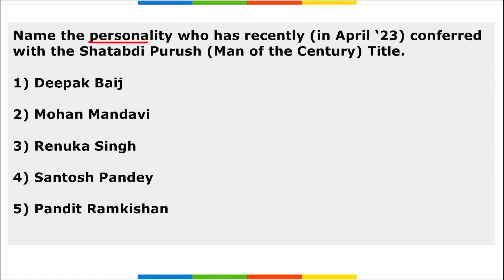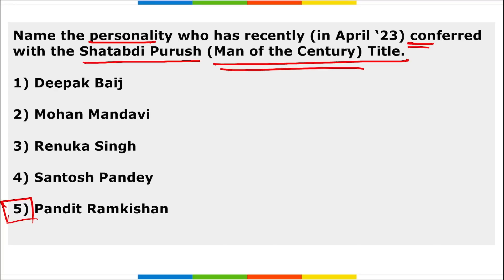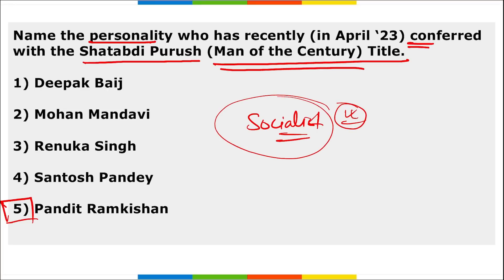Pandit Ramakrishnan, the former member of Parliament of the Lok Sabha, was conferred with the title 'Shatabdi Purush' — meaning Man of the Century — to recognize his efforts as a socialist leader, during an event organized to mark the birth centenary of Madhu Limaye, a socialist ideologue and ace parliamentarian, in New Delhi.